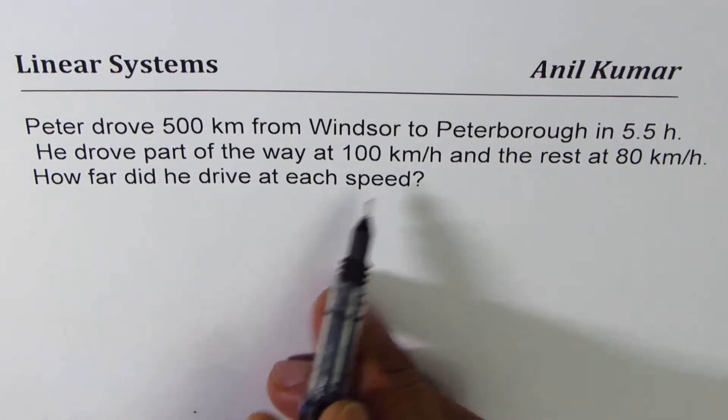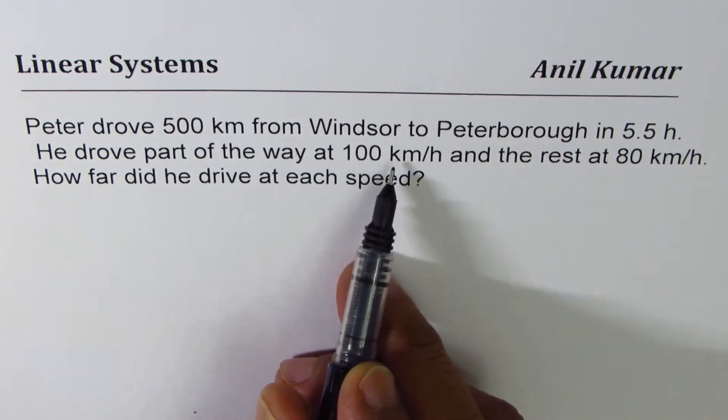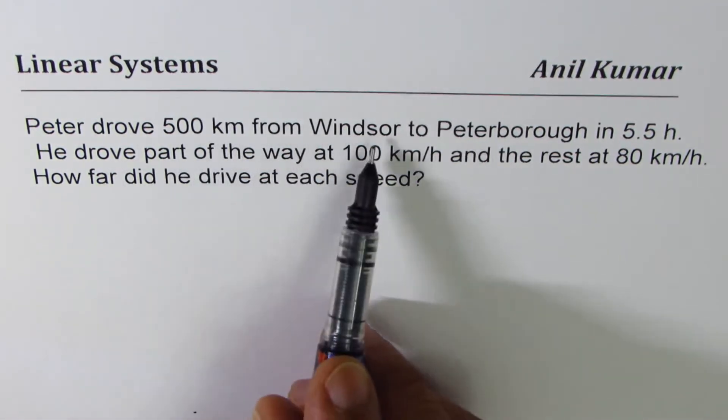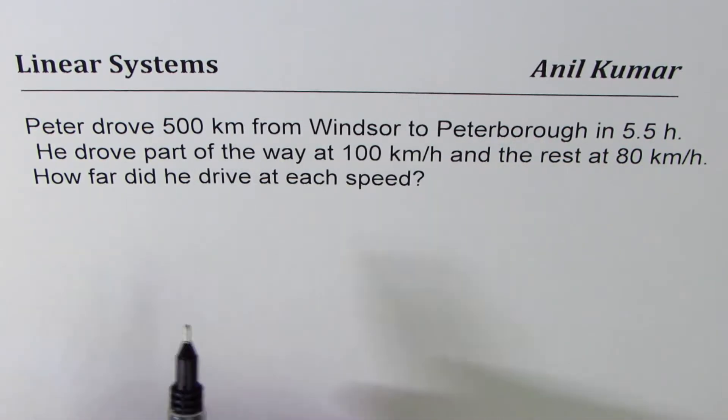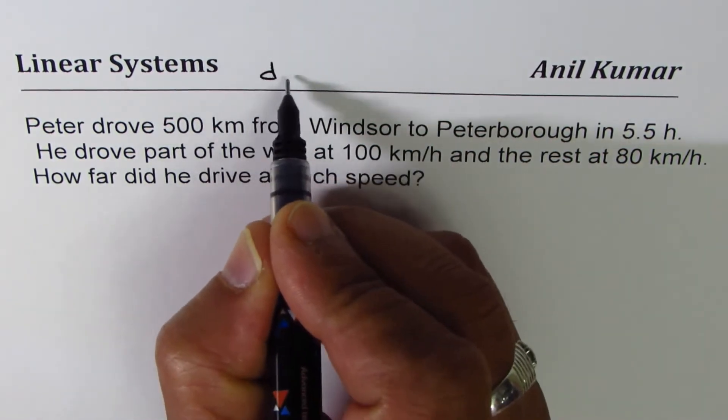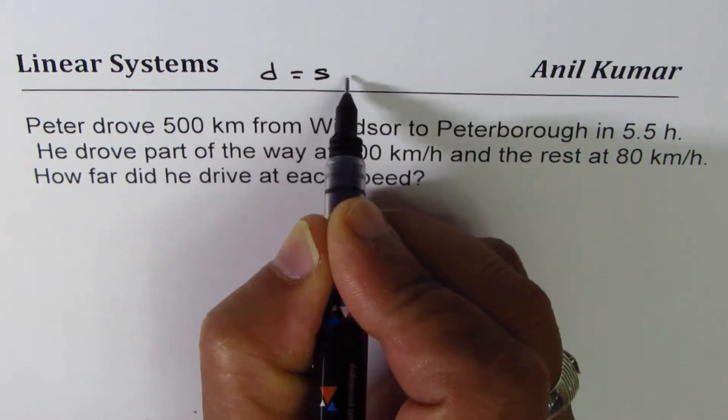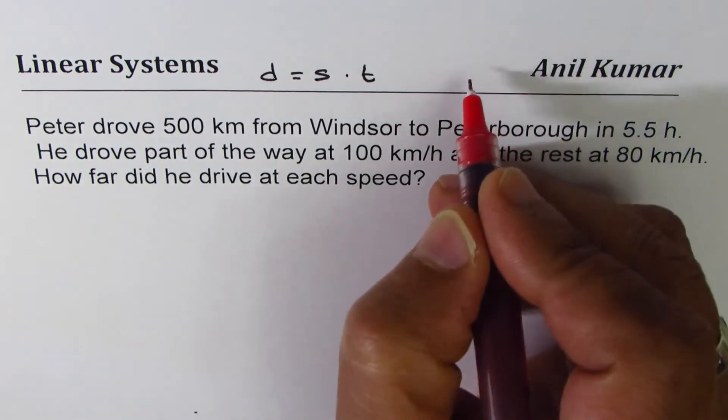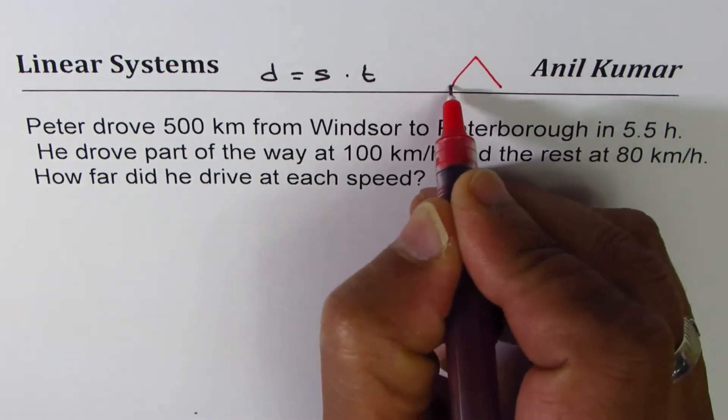In this case we want to find the distance traveled at each speed by Peter when he drove 500 kilometers from Windsor to Peterborough. Distance is speed times time. We're going to use this relationship: distance is speed into time. Sometimes we make a triangle to remember how it is related.